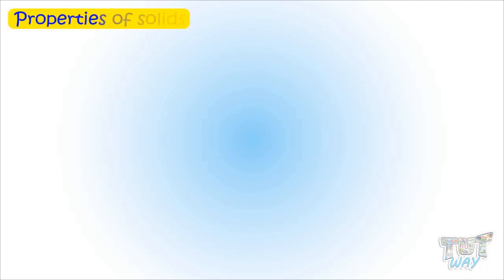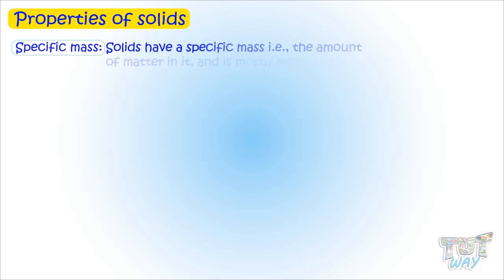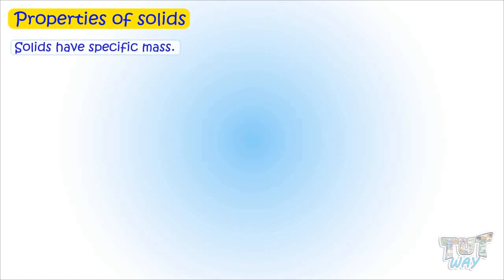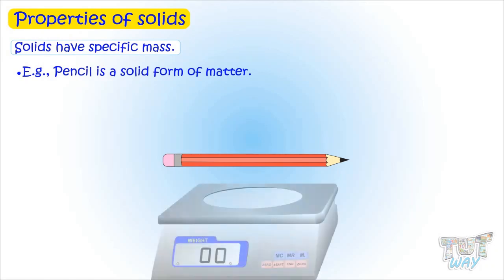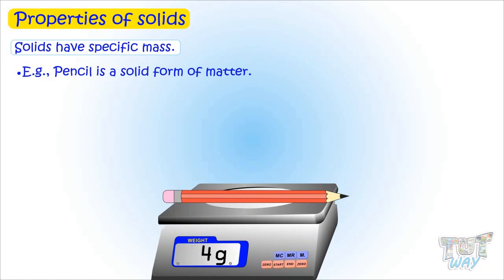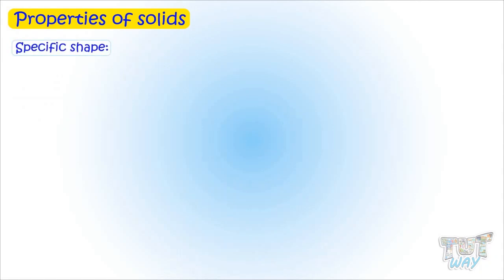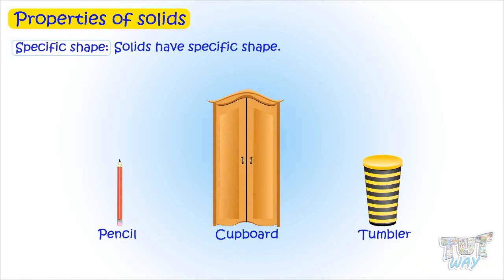Properties of solids. First, specific mass: solids have a specific mass, that is the amount of matter in it, and is mostly measured in grams or kg. For example, a pencil is a solid form of matter and its mass is about four grams. Solids have a specific mass — it will remain four grams unless you sharpen it or reduce it. Second property is specific shape: solids like a pencil, a cupboard, or a tumbler have a specific shape.